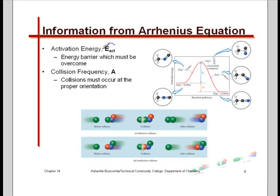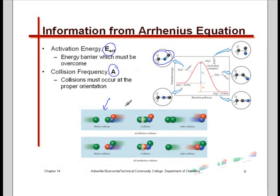From the Arrhenius equation, we get two parameters. When we talk about these two parameters — Ea and A — we're really digging into the mechanics of the reaction: how the molecules rearrange, how do they collide, how often do they collide. This is a building block for organic chemistry, where you'll see reaction mechanism in much more detail. Having a little introduction here to the concept can be very helpful for that course.